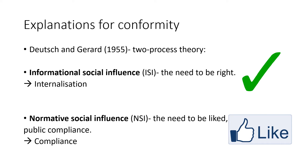The second explanation is normative social influence, which is the need to be liked. This is where you conform in a way that you think others will approve and accept you. This is public compliance — you publicly agree, but privately you may think differently.